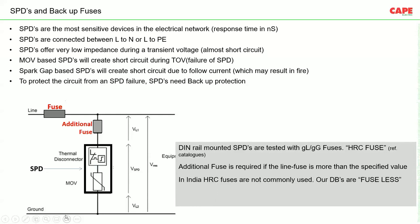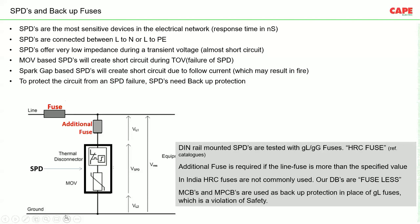In India, there is a preference for fuseless DBs, so people often use MCBs instead of fuses. Some manufacturers also recommend MCBs or MPCBs, which is not safe at all. This is a violation of safety and can cause a fire hazard because fuses and MCBs have completely different tripping characteristics and tripping curves. A 63 A fuse will not trip in the same time as a 63 A MCB, so we must be very careful when choosing backup protection.